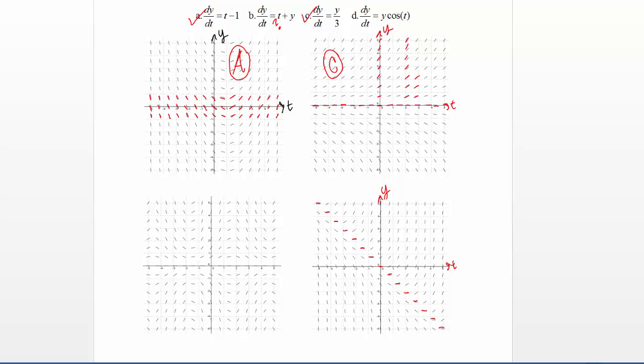And then also I could use the same logic to say that in this quadrant here, where t and y are both negative, that I should have all negative slopes. And it looks like that's true, so that's good.